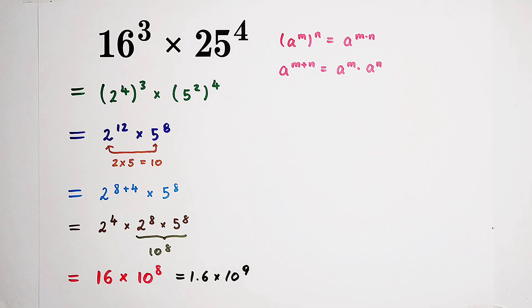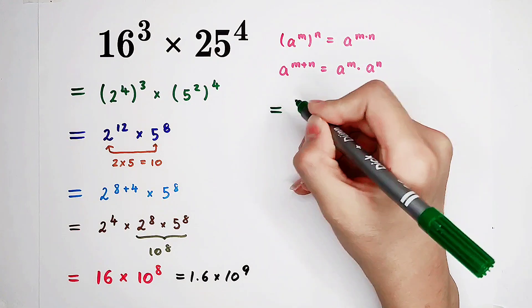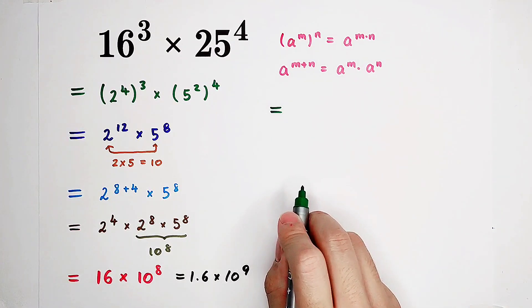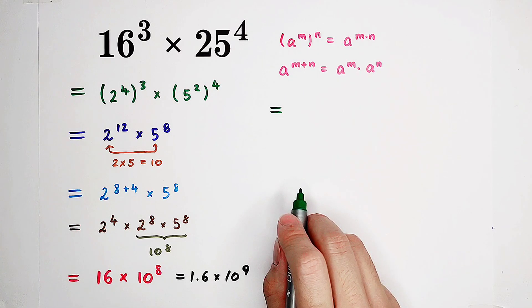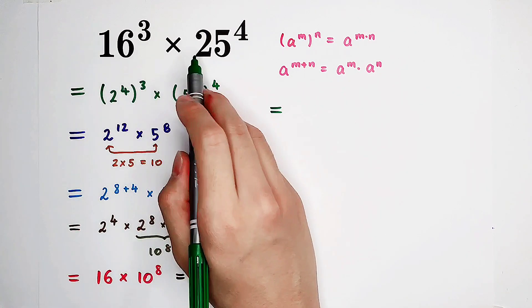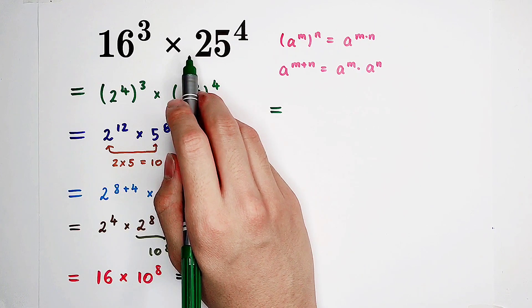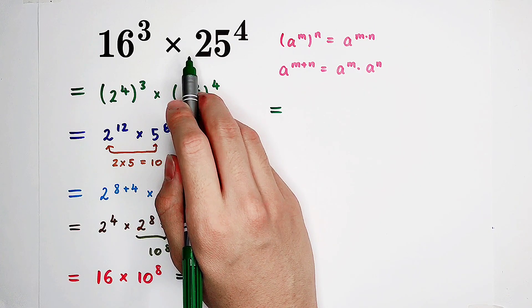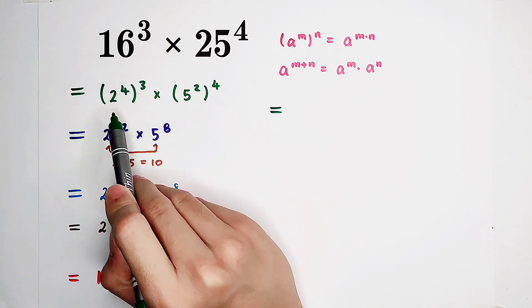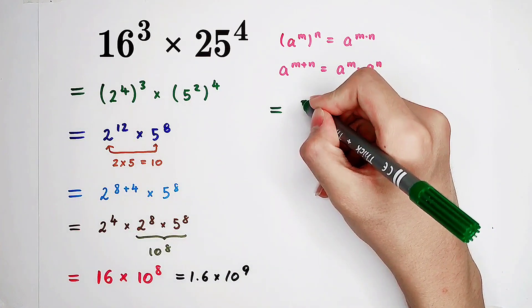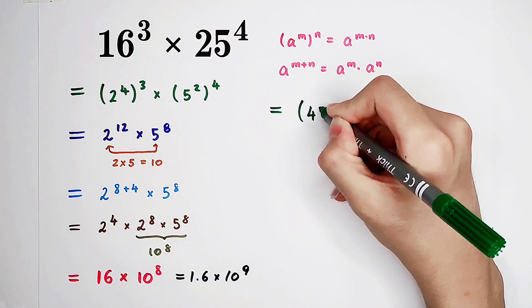But of course, we also have another method. And the second method is coming. Firstly, we know that 4 times 25 is 100, which is equal to 10 squared. So now, instead of writing this 16 as 2 to the power of 4, I'm going to write it as 4 squared.